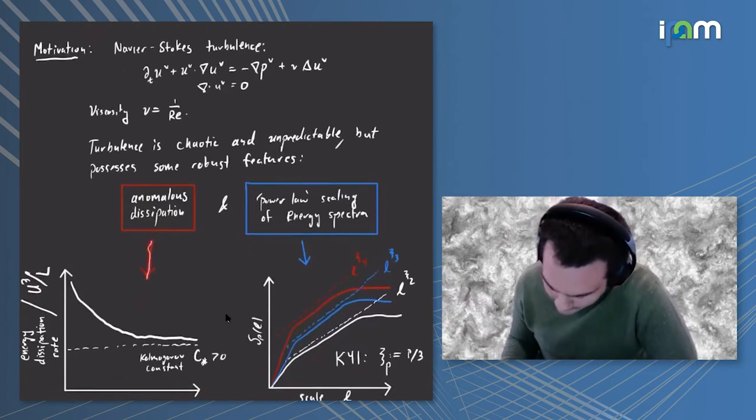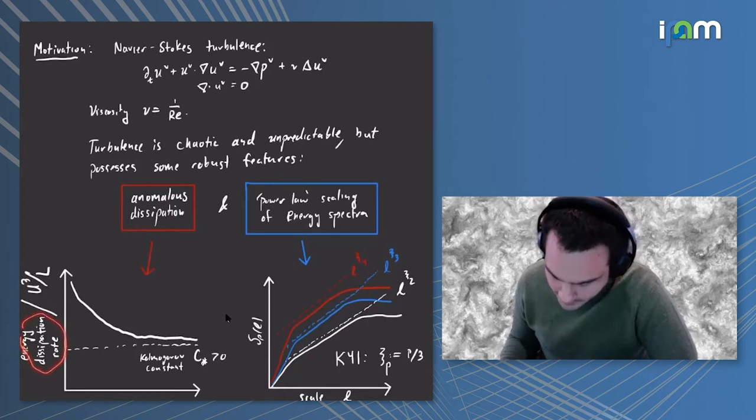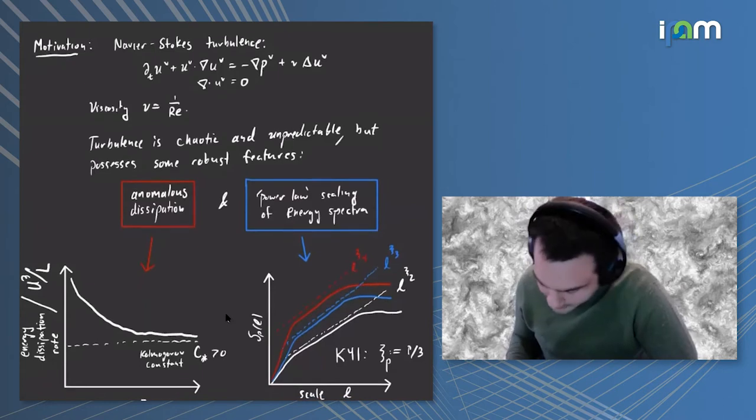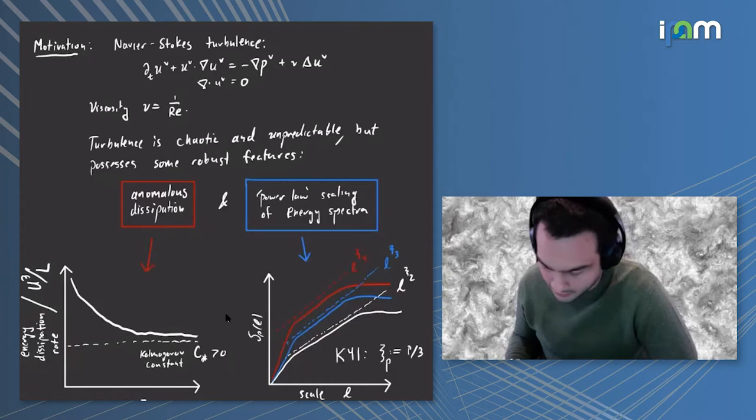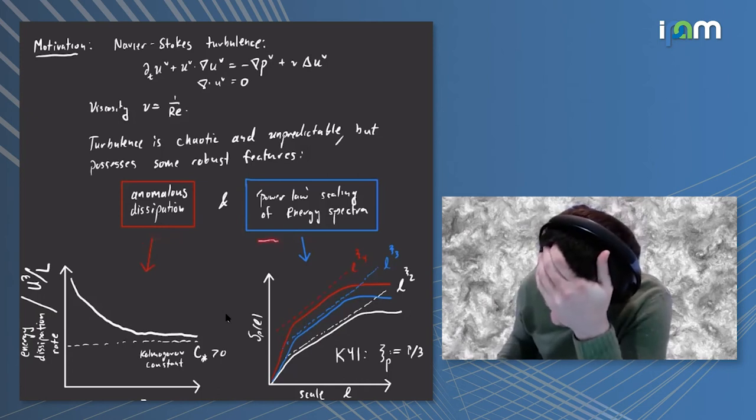The behavior is chaotic and unpredictable, but there are certain features that are turbulent features. One of them is anomalous dissipation, often termed the zeroth law. The energy dissipation rate non-dimensionalized by the characteristic velocity cubed over L tends to a non-zero limit as Reynolds number goes to infinity. This is anomalous because energy dissipation requires Reynolds number to not be infinite, but somehow in this limit it survives.